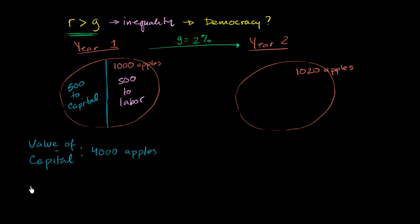So given this, what is the return on capital in year one? Well, the return on capital in year one is going to be the return of 500 apples divided by the value of the capital, divided by 4,000 apples. So that's going to give us 5 divided by 40, which is 1 eighth, which is 12.5 percent. So the return on capital, at least in year one, is greater than—well, let's go to year two so we can look at the return on capital in year two and compare it to the growth.